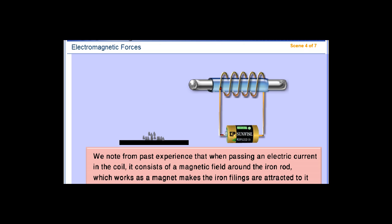We note from past experience that when passing an electric current in the coil, it creates a magnetic field around the iron rod, which works as a magnet, making the iron fillings attracted to it.